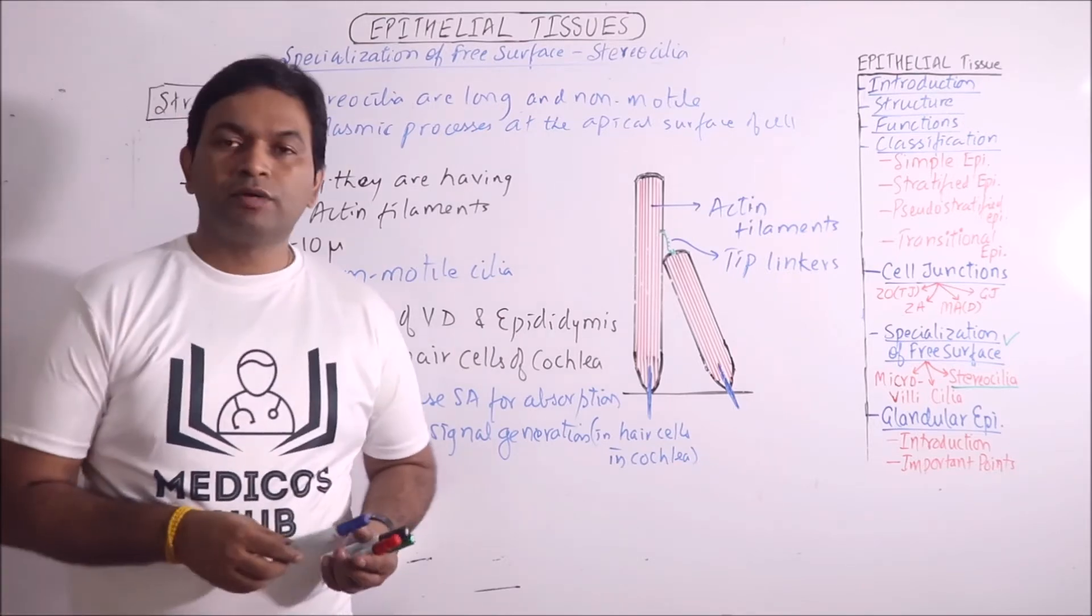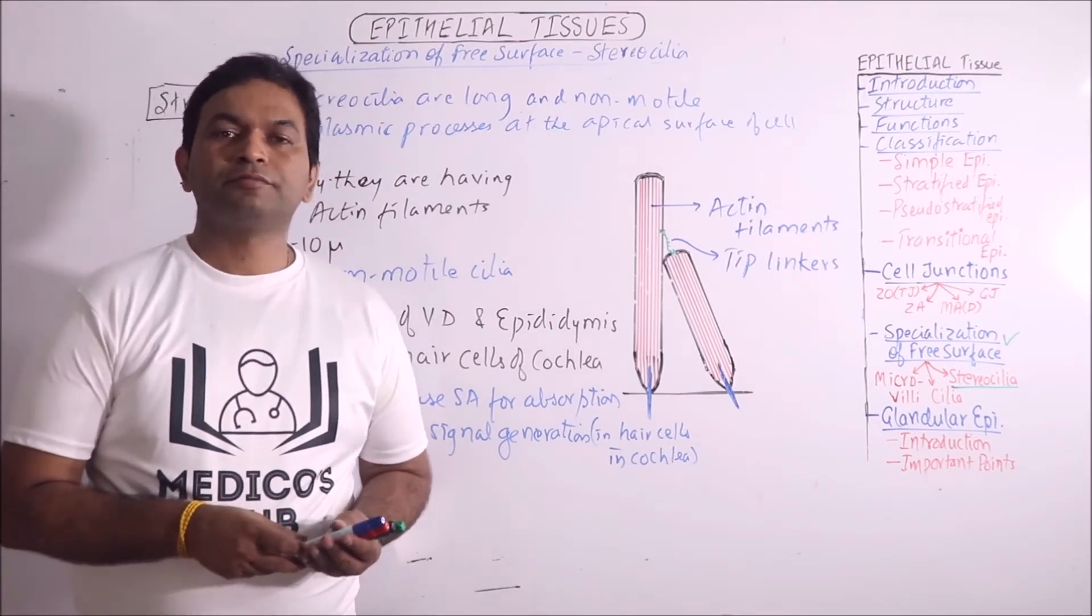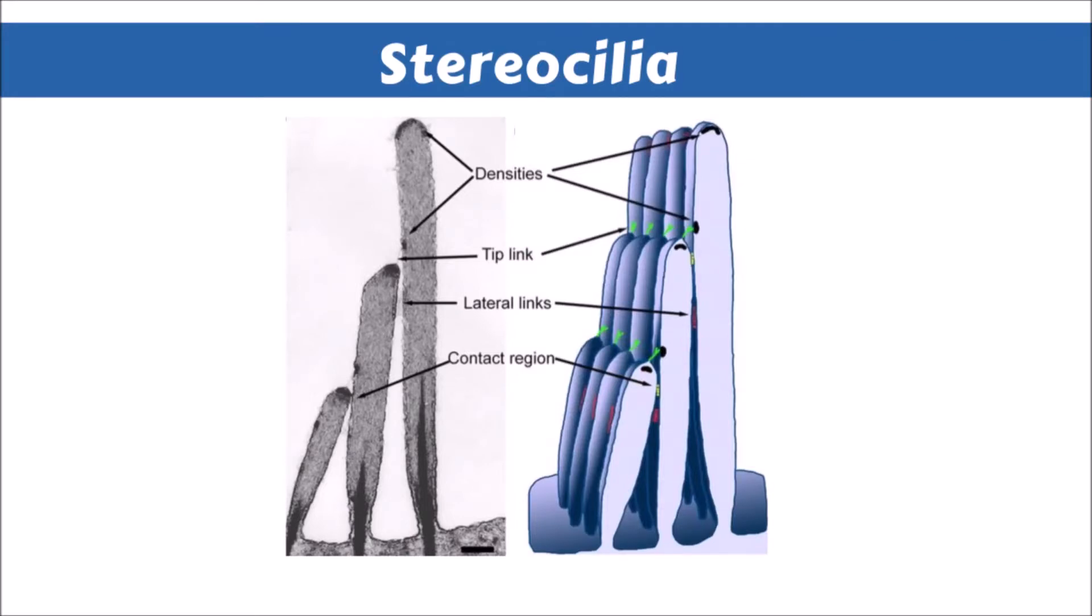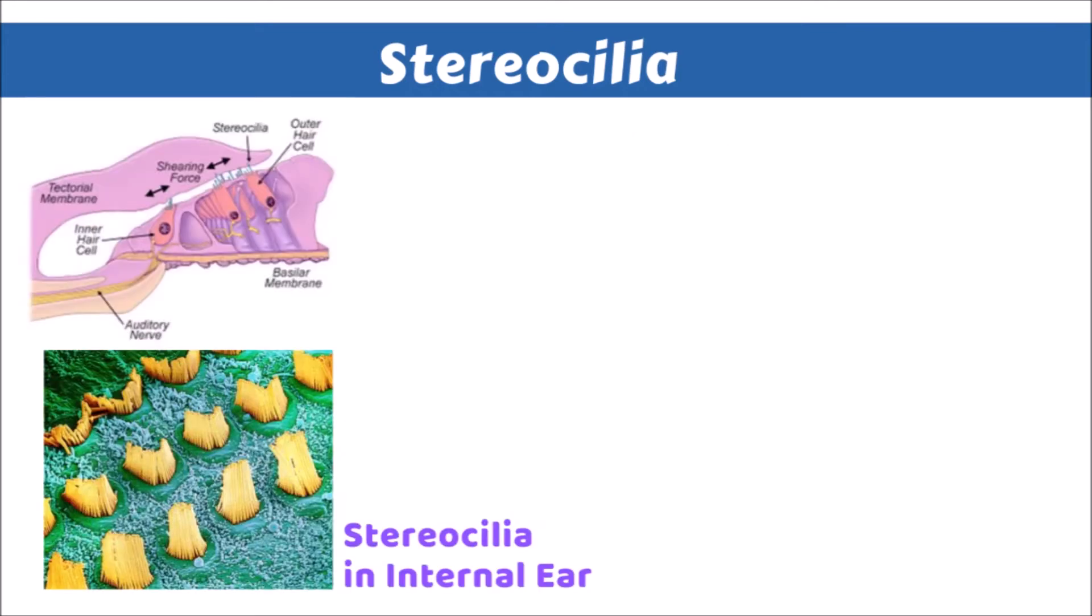Now we will view some images and diagrams related with stereocilia. In the given diagram, we are observing the stereocilia. These are also known as long and non-motile cilia. These are interconnected with each other by lateral links and tip links. These are found in internal ear. In internal ear, hair cells are present which are having these stereocilia.